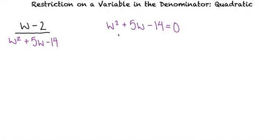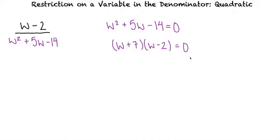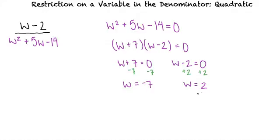Now we can factor the left side. 7 and −2 will multiply to −14 and add to 5, so our factors should be (w + 7) and (w − 2). We can rewrite the equation w² + 5w − 14 = 0 as (w + 7)(w − 2) = 0. Next, we set each factor equal to 0. When we solve for w, we get w = −7 and w = 2.